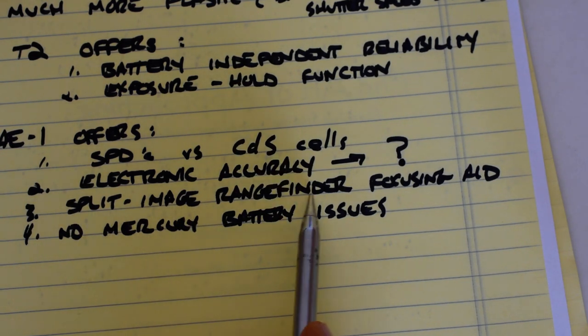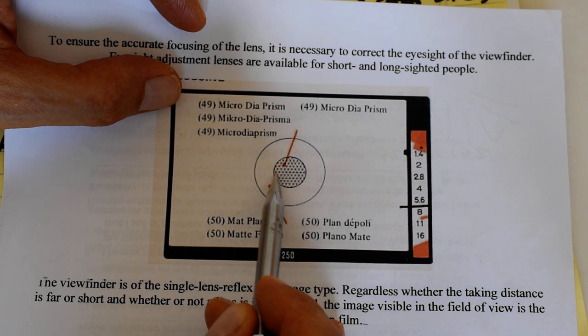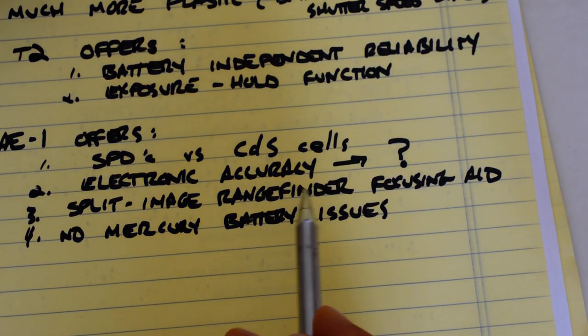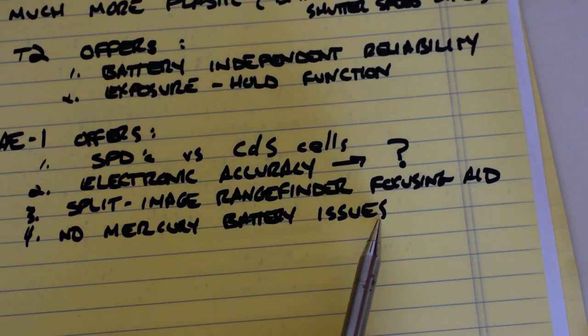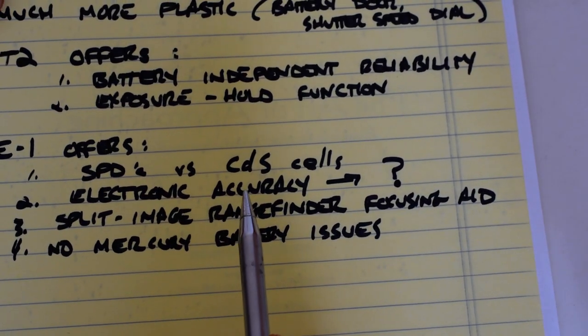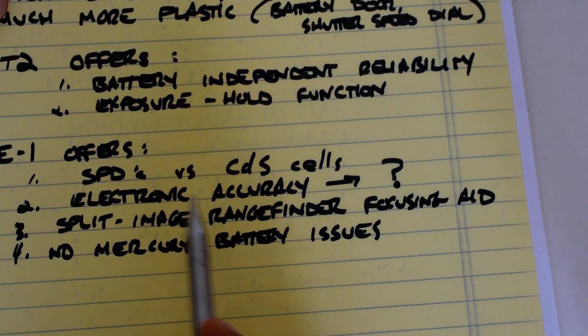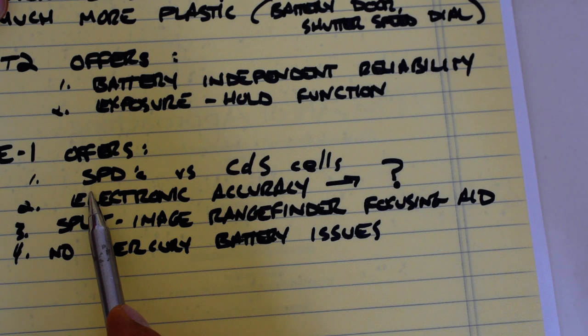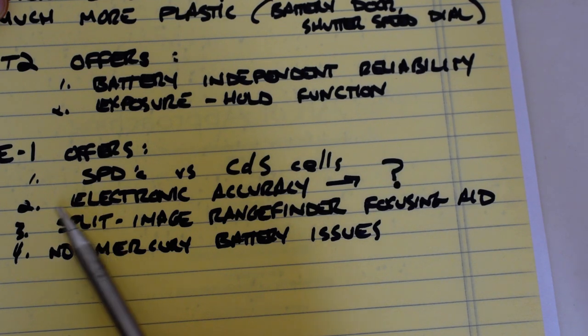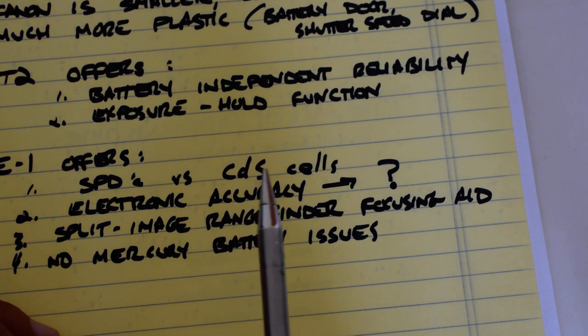Number three, the AE-1 offers the split image rangefinder focusing aid in the center of the focusing screen. The AE-1 has a split image rangefinder surrounded by a micro prism plus a ground glass focusing field, so it has an additional focusing aid. And it has no mercury battery issues, although the plastic construction and the comment by the Camera Rescue folks about the inaccuracy of the meters over time. I mean, these are consumer products made in the 1970s and 1980s. Does anybody seriously expect a consumer product to last 40 years and maintain its accuracy and reliability? I think it's a no-brainer. I would take an Autoreflex over an AE-1 any day of the week.